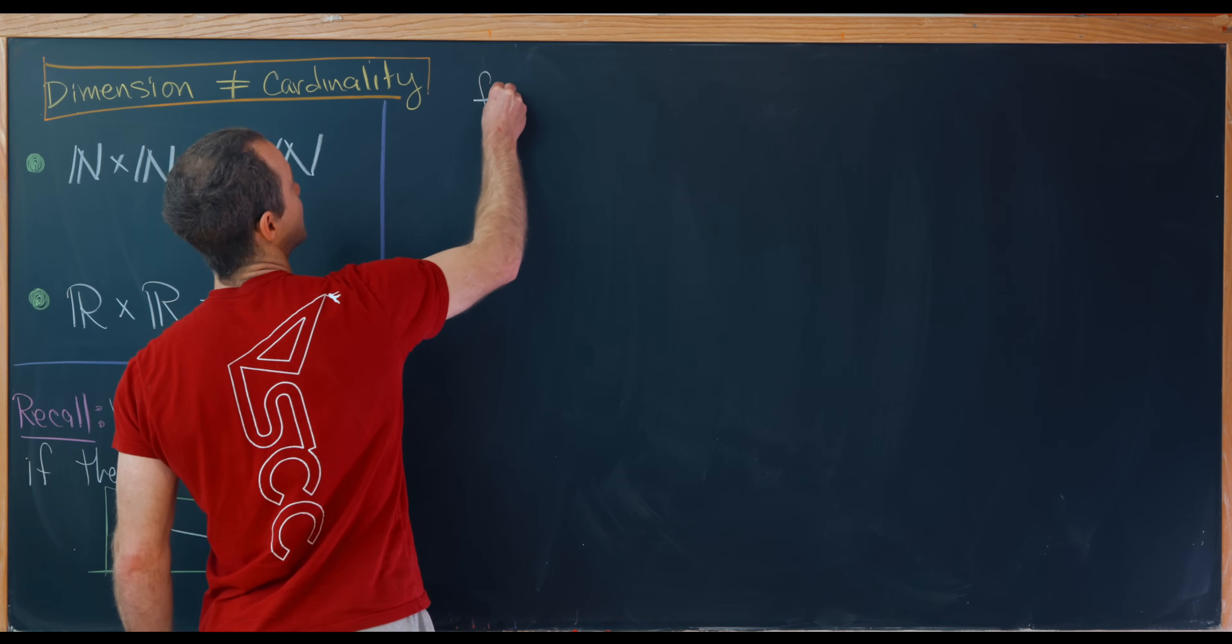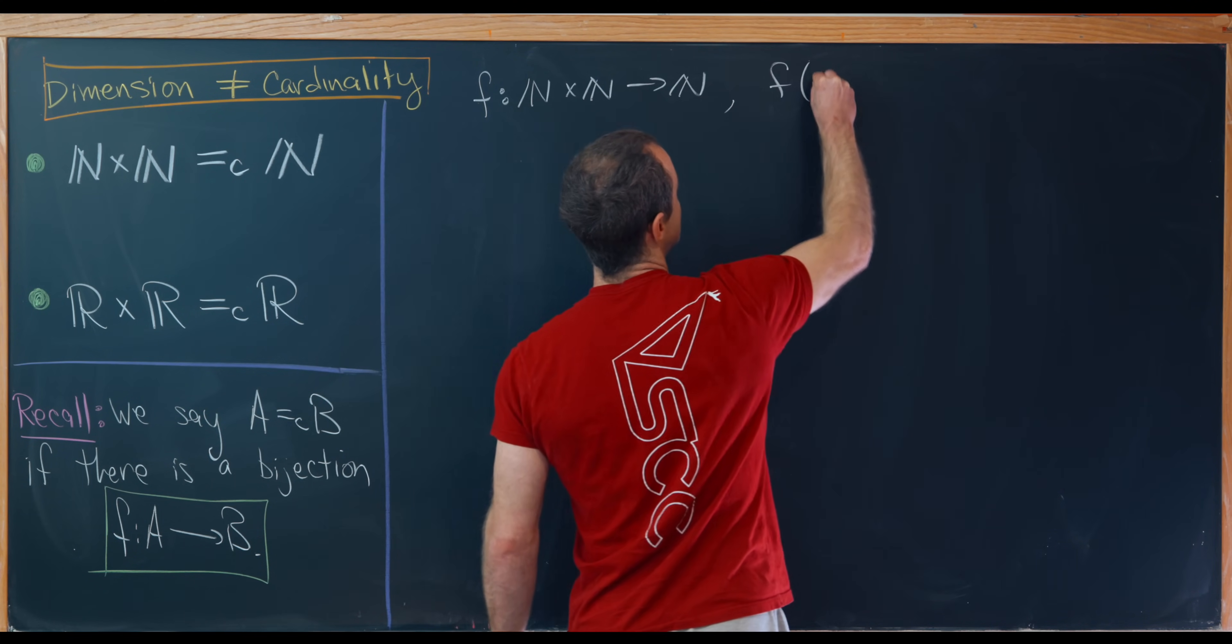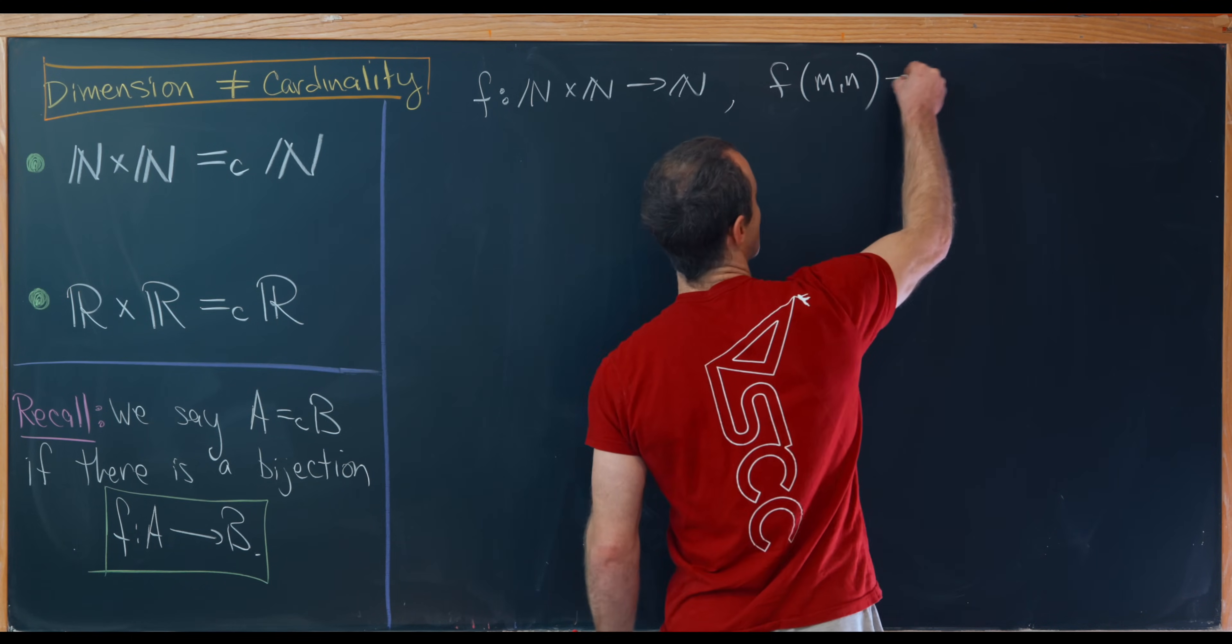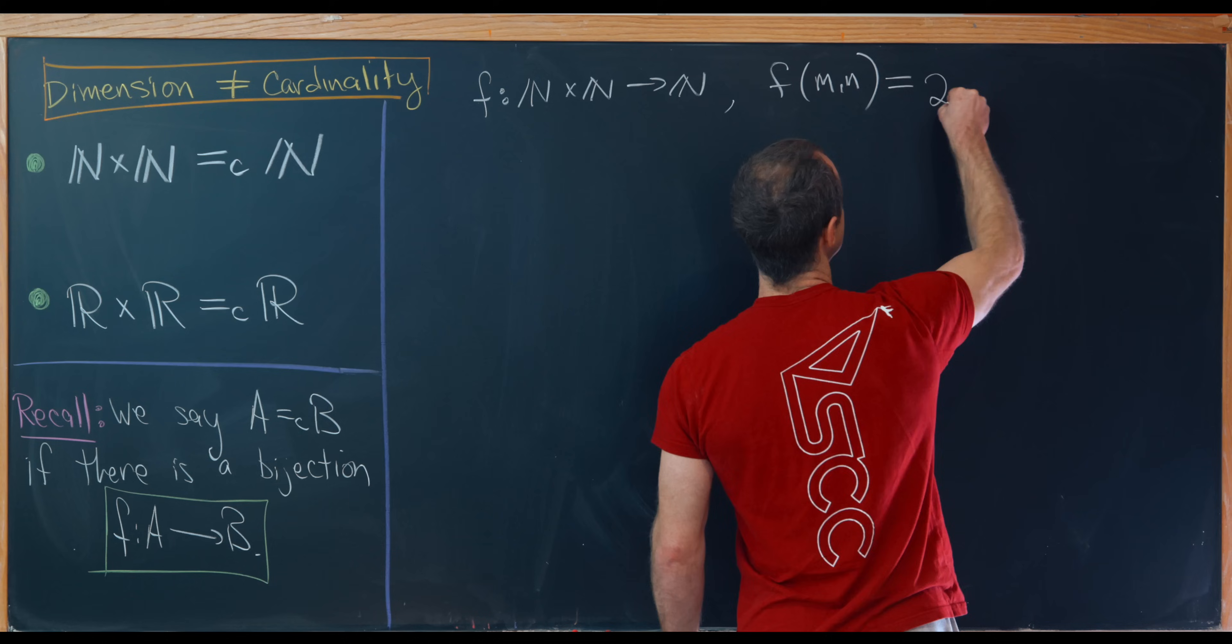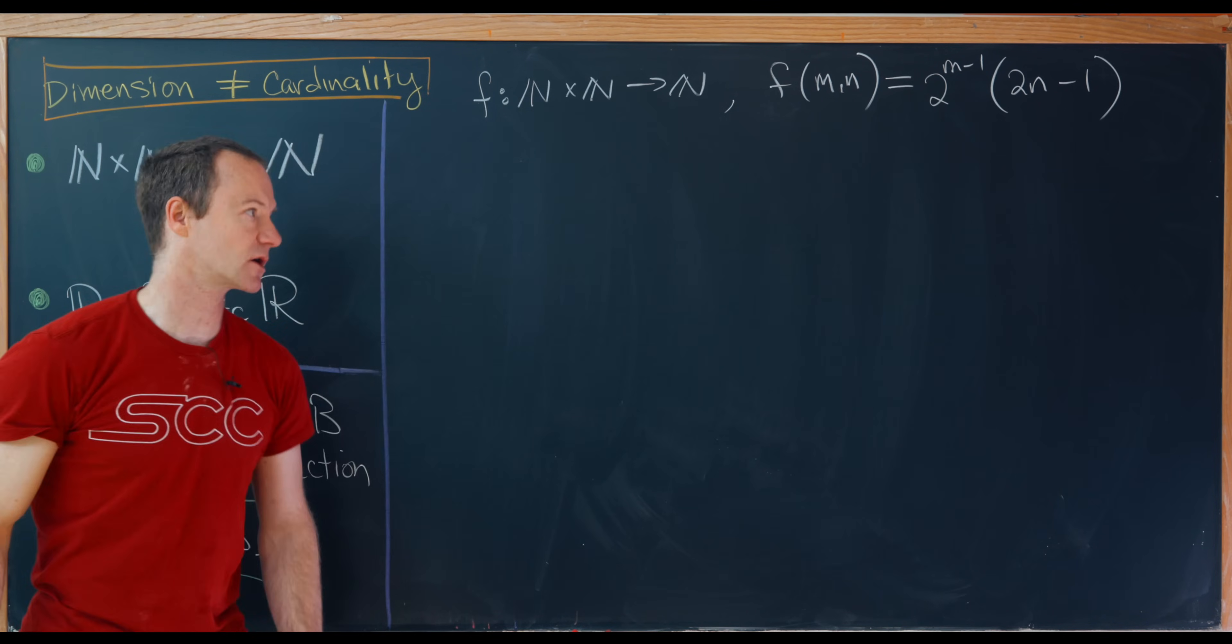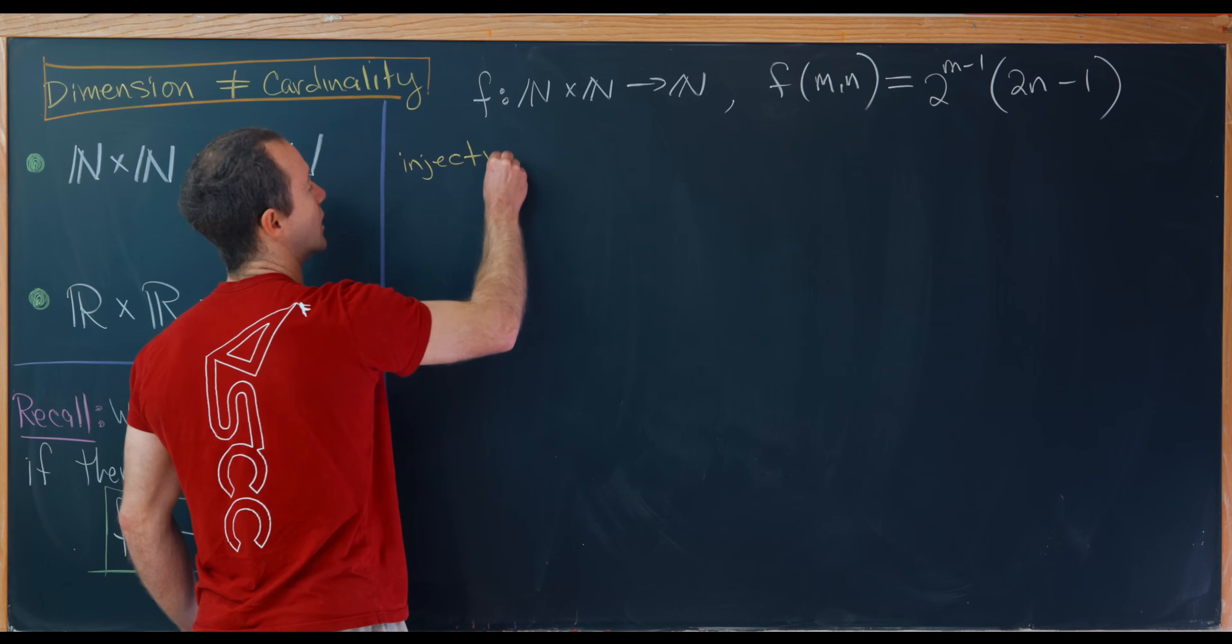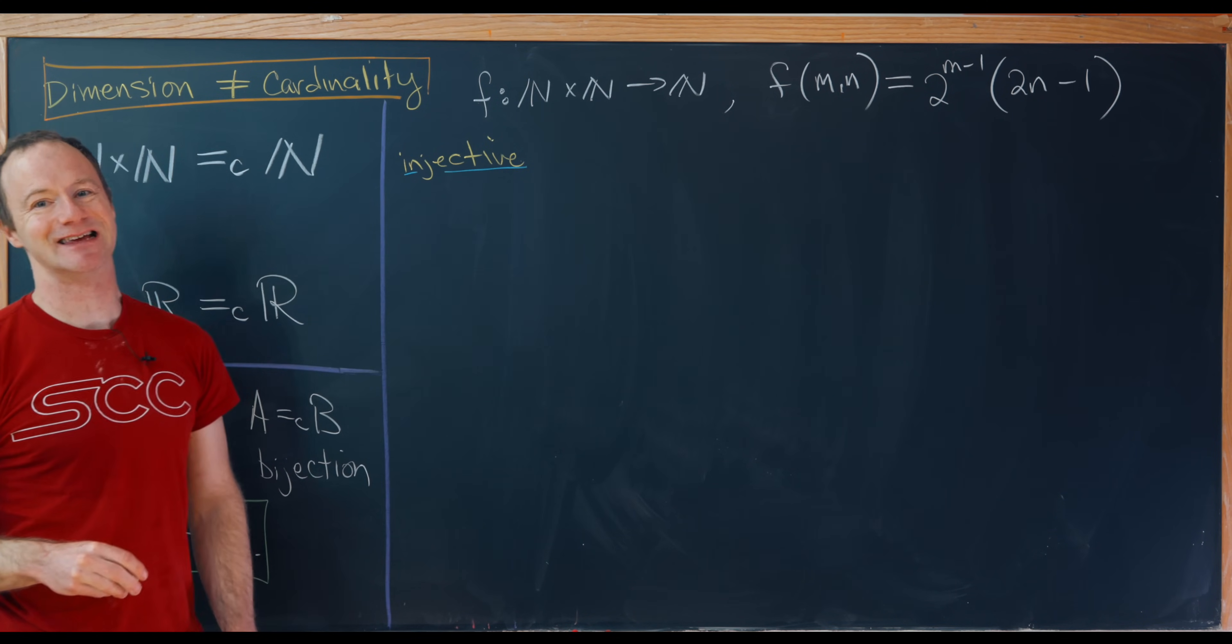So let's define a function f from N cross N to N by the following rule. Notice the input needs to be a pair of natural numbers, so that means we need two things to be inputted, f of m,n. And we need the output to be just a natural number. So perhaps we'll take this to be something like 2 to the power m minus 1 times 2n minus 1. Okay, so let's recall that a function is bijective if and only if it's both injective, in other words one-to-one, and surjective, in other words onto.